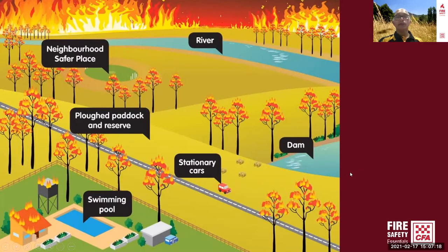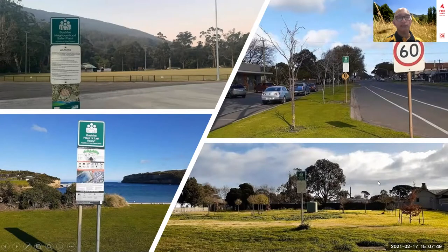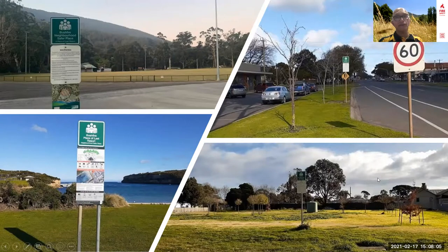A Bushfire Neighbourhood Safer Place is a designated place where members of the community can go to seek some form of protection from a fire situation. As the name suggests, it is a place of last resort — the bottom end of your list of where you could go on a bad fire day. Don't expect a guaranteed level of safety or a comfortable experience, but it offers a chance of some form of survival away from radiant heat.